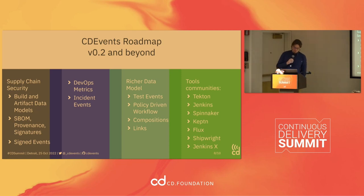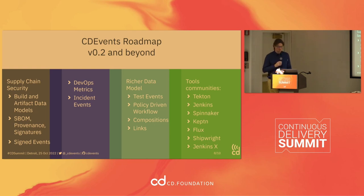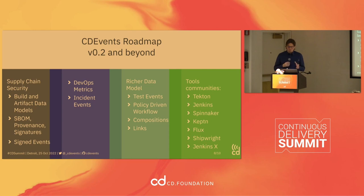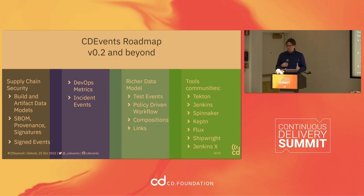We also want to extend the work started on DevOps metrics to include things like incident events, so that we can cover the full span of the four DORA metrics. We also want to further enrich the data model — for example, expanding what we have about test events to enable more policy-driven workflows. If you have a standard way to talk about your tests — unit tests, end-to-end tests, fuzzing, static analysis, dynamic analysis — then you can implement policies in your workflow to decide whether to deploy an artifact to the next stage based on which tests were executed.